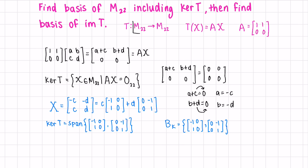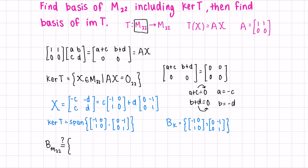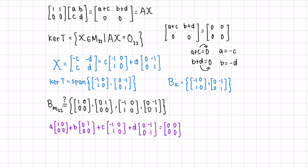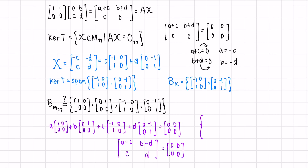Next, to find a basis of M22, our domain, that includes the matrices of the kernel, we need to add two more matrices. Let's try adding in two matrices from the standard basis of M22. To check if these matrices form a basis of M22, we have to check that they're independent. The equations we end up with are: A minus C equals 0, B minus D equals 0, C equals 0, and D equals 0. So clearly A is 0 and B is 0 as well. Since we have only the trivial solution, this set of matrices does form a basis of M22. Since there are four, we know it spans the entire space.